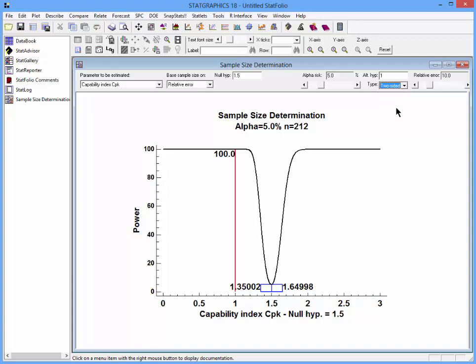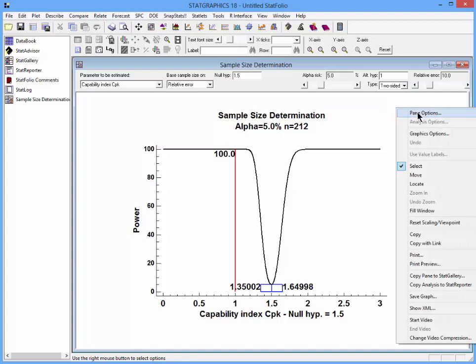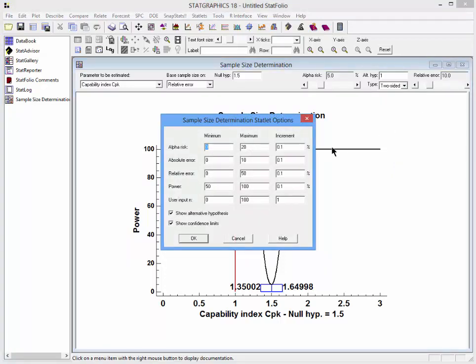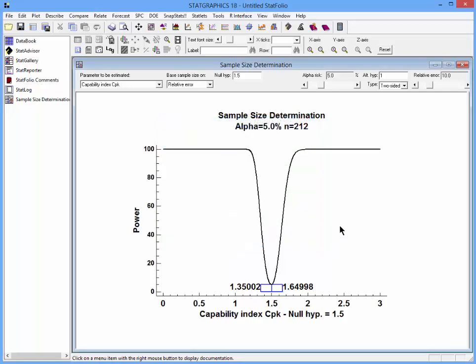The last thing I'll do is press my right mouse button and go to pane options. And for the moment, uncheck the button that says show alternative hypothesis, which is not relevant for the method that I'm using.